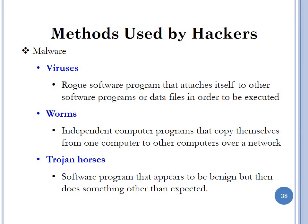Now that we understand the difference between hacking and cracking, let's look at methods hackers use to gain access to systems or data. Hackers can use malware. The first form of malware is viruses — rogue software programs that attach themselves to other software programs or data files in order to be executed. Hackers also use worms, which are independent computer programs that copy themselves from one computer to another over a network. A hacker may also use a Trojan horse — a software program that appears to be benign but does something other than expected, such as a word processor or music app that secretly steals data from your system in the backend.